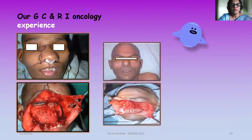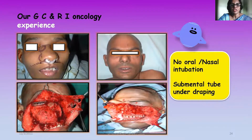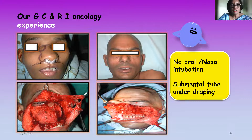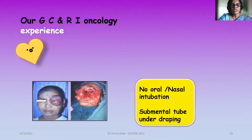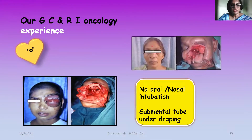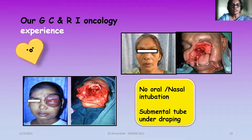At our GCRI, we use submental intubation for large nasal tumours or maxillary tumours where a much larger area of exposure is needed for radical dissection. In those cases, there are no oral or nasal tubes visible in the field — the submental tube is secured under the drape. These are also photos of large orbital tumours where full exposure is achieved with the submental tube maintained under the drape.